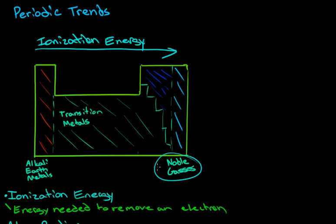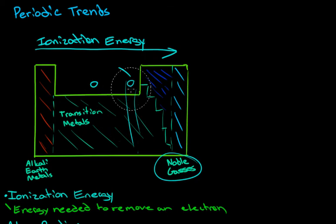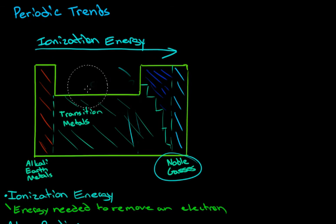The closer they are — if we're here and we move over to an atom that's somewhere along here — then this one is closer to being a full octet. It's going to say, 'I want these electrons, I'm closer to being a noble gas, don't take them away from me.' So we will have to add more energy to remove the electrons, and that's why ionization energy increases as we move left to right.